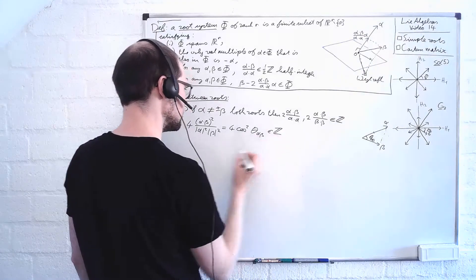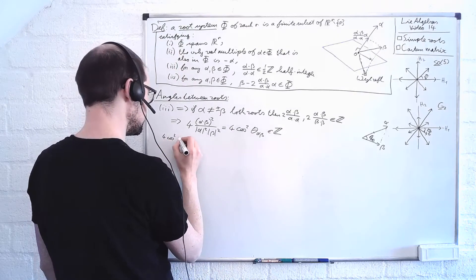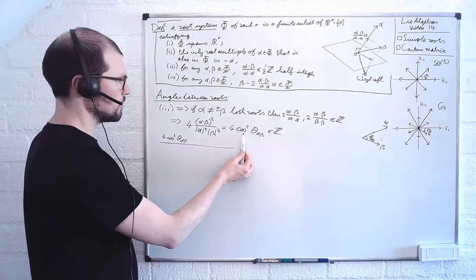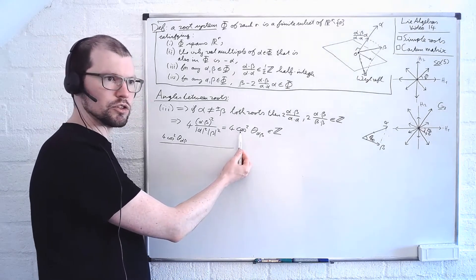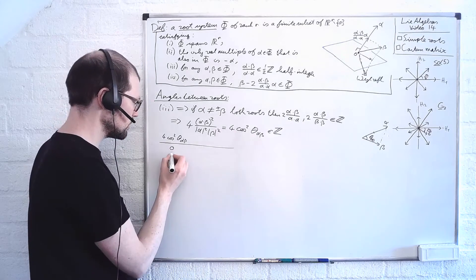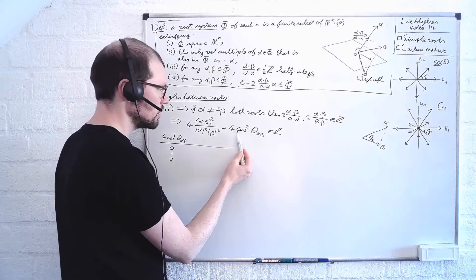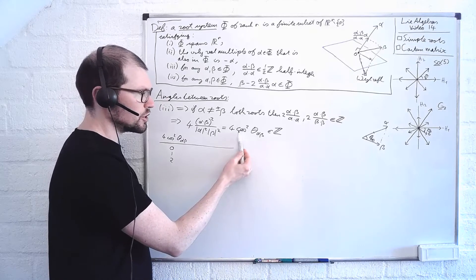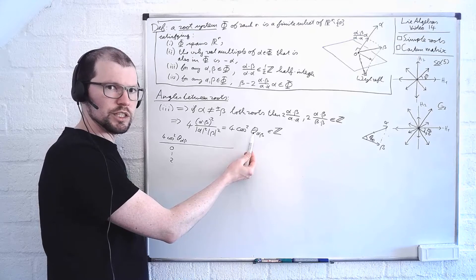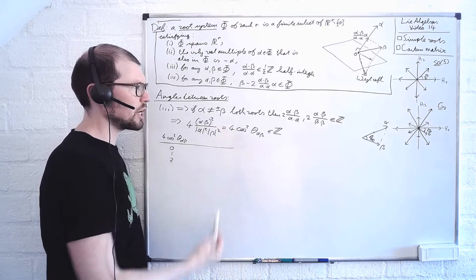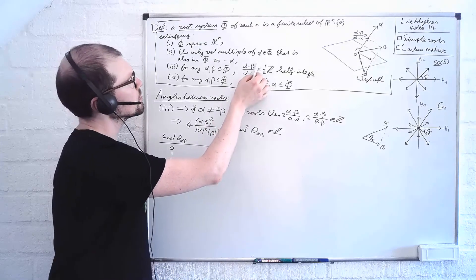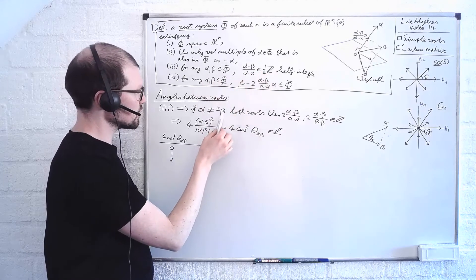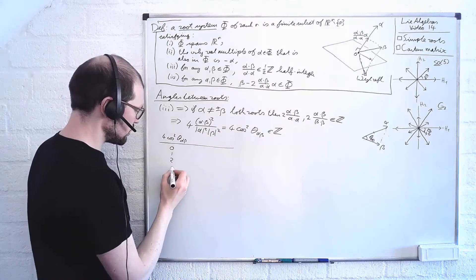Let's make a small table of the values. Since 4 cos²θ must be an integer, and clearly it cannot be negative, the smallest possible value is 0. Then 1, 2. The largest possible integer would be 4, since cosine cannot exceed 1. But cosine equal to 1 or minus 1 means the vectors are parallel. By property 2, the only roots aligned with each other are alpha and minus alpha, which we excluded. So the only options are really 0, 1, 2, and 3.